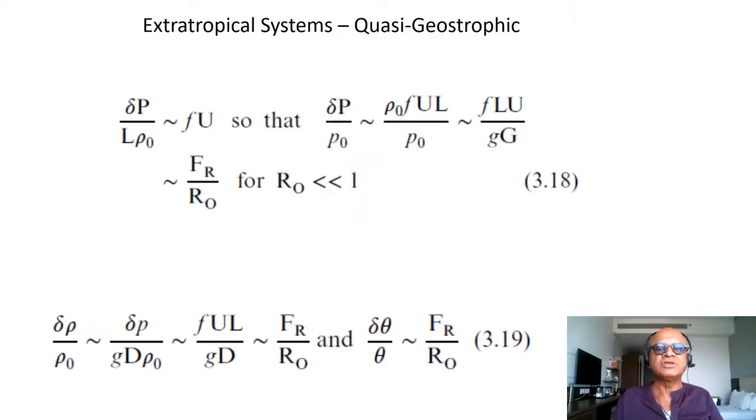In the extratropical systems, either the system is in geostrophic balance or slightly away from it in what is called quasi-geostrophic balance. To compare the tropics and extratropics, let's go to the extratropical systems first. Looking at the δp/(Lρ₀) term, which is approximately equal to the Coriolis term, so δp/p₀ = ρ₀FUL/p₀. We divided both sides by p₀ and we can write this in terms of the scale height: F·L·U/G times G, which is approximately equal to the Froude number (the gravity wave speed to the speed of the fluid) divided by R₀, for Rossby number much much less than 1, which is always valid in the extratropics.